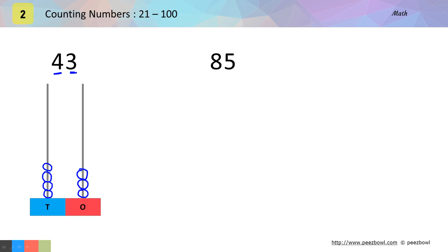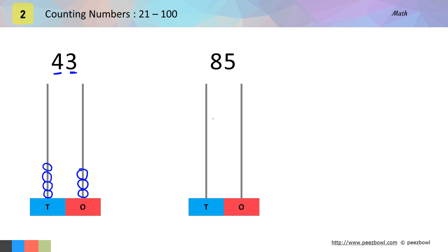Let us take one more example. In this case we have number 85. In 85, we will draw 5 circles on the 1s line because we have number 5 on the right hand side — here we have 1, 2, 3, 4 and 5 circles on the 1s line. And we will draw 8 circles on the 10s line — 1, 2, 3, 4, 5, 6, 7 and 8 circles on the 10s line.